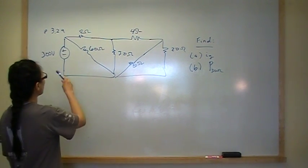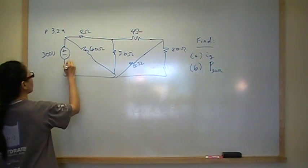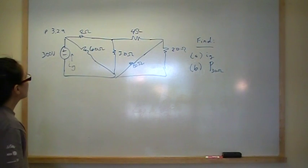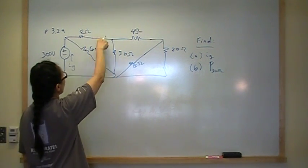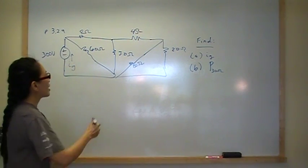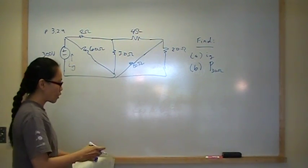And we're going to find the current I sub g. This is a 60 ohm resistor, 8, 30, 80, 20, and 4. And we need to find the power dissipated in this 30 ohm resistor.